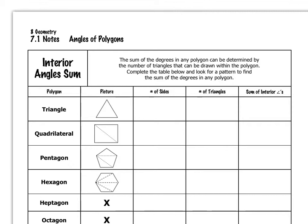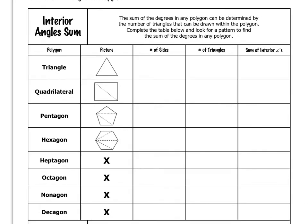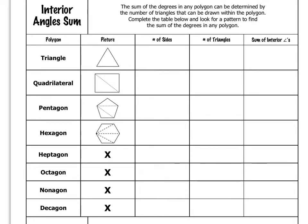Remember, polygons are simply closed figures formed by three or more sides. You can see down here in this chart, which we'll fill out in a moment, the different types of polygons that we have. We've been talking about triangles for quite a while, which is a three-sided polygon. A four-sided polygon is a quadrilateral, and then we have five-sided, six-sided, seven-sided, etc., which we'll look at here in a moment.